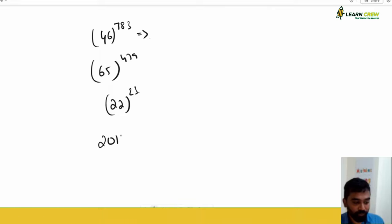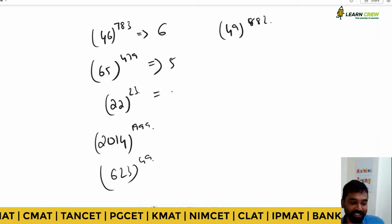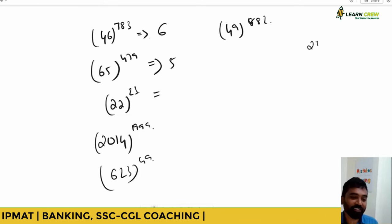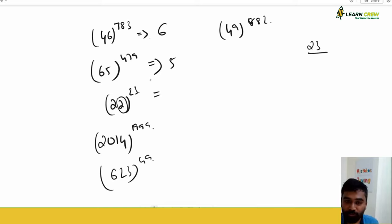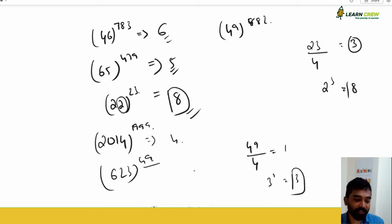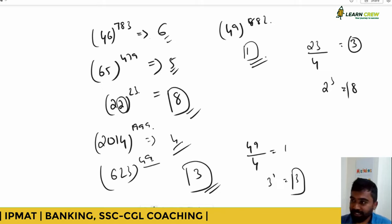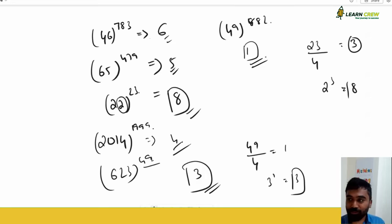Examples: 22 to the power of 23, 2014 to the power of 1999, 623 to the power of 49, 49 to the power of 4882. For 22 (ends in 2): four possibilities, 23 divided by 4 gives remainder 3 — so the unit digit is two to the power of 3, which is 8. For 4 to the power of 999: odd power, unit digit is 4. For 623 (ends in 3): 49 divided by 4 gives remainder 1 — three to the power of 1 is 3. For 49 (ends in 9): 4882 is even — unit digit is 1.